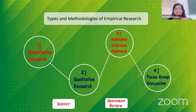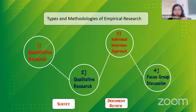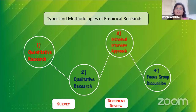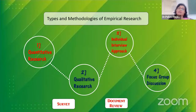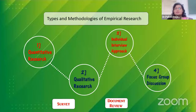The fourth is focus group discussion. This method involves an organized discussion between six to eight people. This form of data collection provides participants with an opportunity to present their views on a certain topic. This helps the researcher to explore how groups think about issues, the range of opinions and ideas, and helps in exploring inconsistency and variation in the thought process. It is important for the researcher to purposefully recruit the participants.